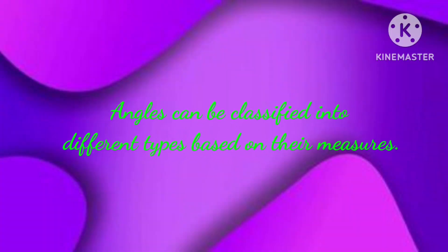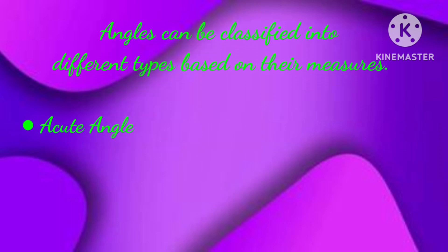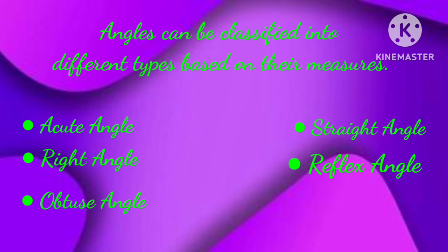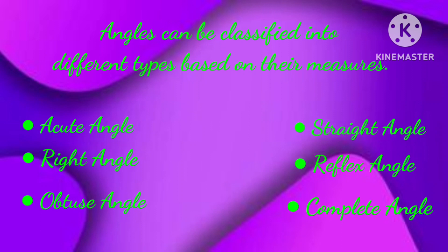Angles can be classified into different types based on their measures: acute angle, right angle, obtuse angle, straight angle, reflex angle, and complete angle.